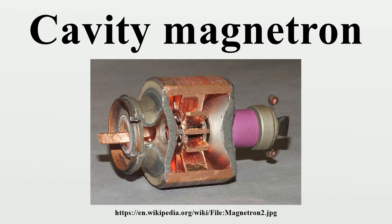A process known as rectification uses a tube with only two electrodes: a negatively charged cathode which emits electrons, and a positively charged anode which attracts them. Thus a current of electrons flows in one direction only, from the cathode to the anode. If a source of alternating current is connected between the anode and the cathode, current will only flow during the half of the AC cycle when the anode is positive relative to the cathode, converting the bidirectional alternating current to a unidirectional direct current.